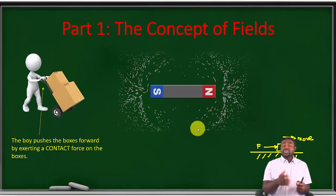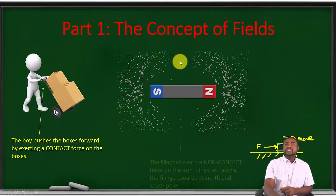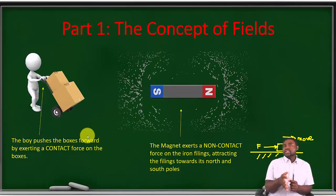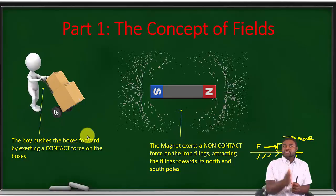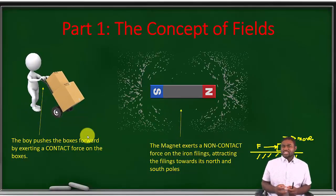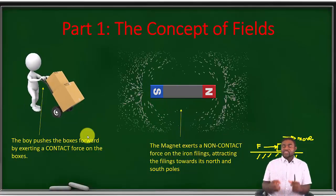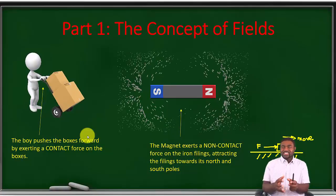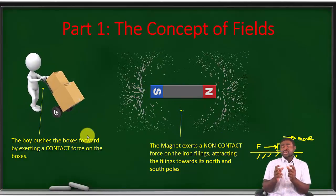On the other hand, if you look at this scenario — a magnet attracting iron filings into itself — the mystery is that the magnet and the iron filings are not in contact with each other, but the magnet is capable of exerting a force across space without direct contact on the iron filings. How can an object not in physical contact with another object exert a force on that object? These types of forces are called non-contact forces, also known as action-at-a-distance forces.